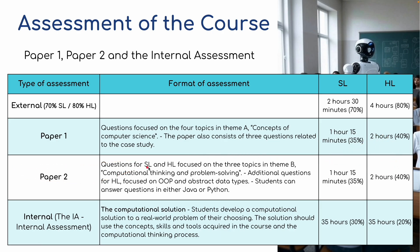Paper two: questions for standard level and higher level focus on three topics in theme B — computational thinking and problem solving. Additional questions for higher level focus on object-oriented programming and abstract data types. Students can answer questions in either Java or Python. The IA is 35 hours, worth 30% for standard level and 20% for higher level accordingly.